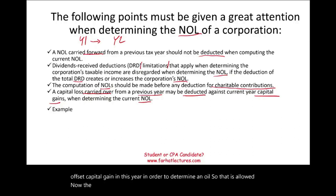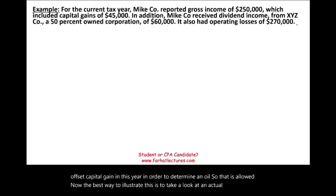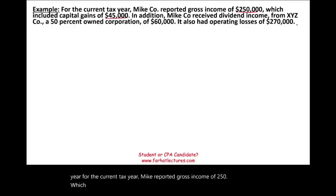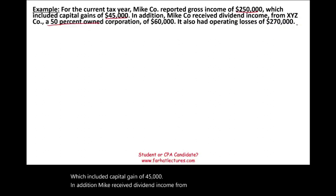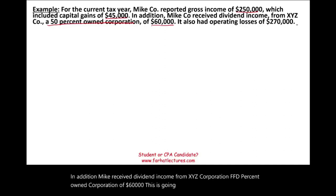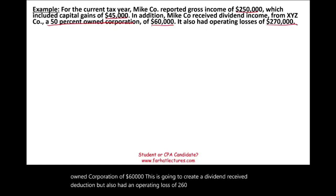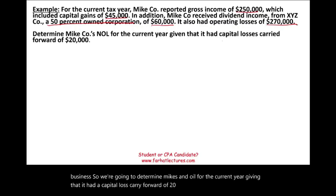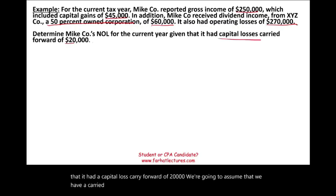Let's take a look at an example. For the current tax year, Mike reported gross income of $250,000, which included a capital gain of $45,000. In addition, Mike received dividend income from XYZ Corporation, a 50%-owned corporation, of $60,000. This will create a dividend received deduction. Mike also had an operating loss of $260,000, and a capital loss carried forward of $20,000.